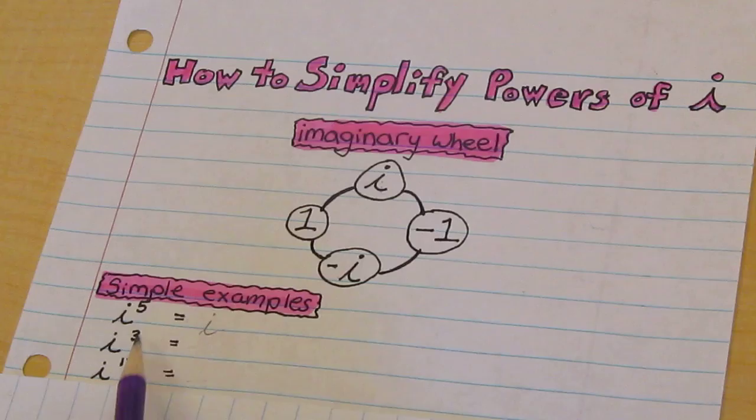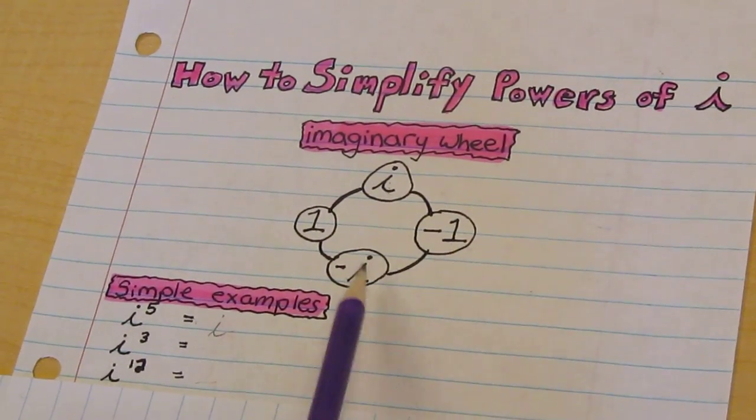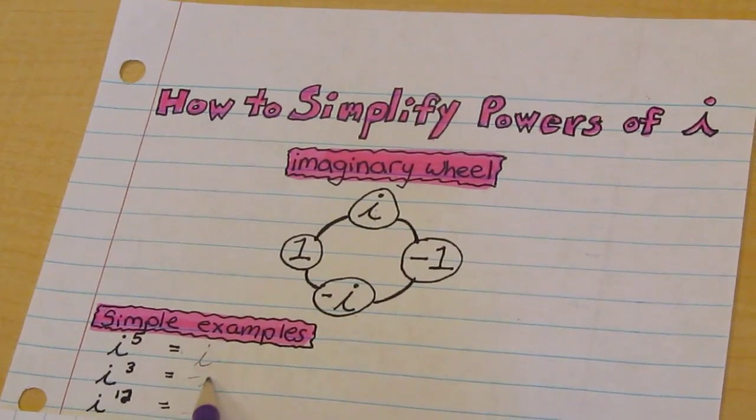For the next one it's i to the third. So we go one, two, three. So the answer is negative i.